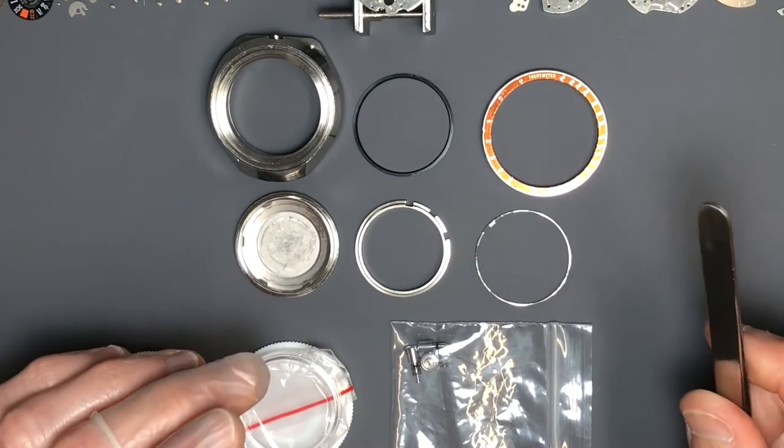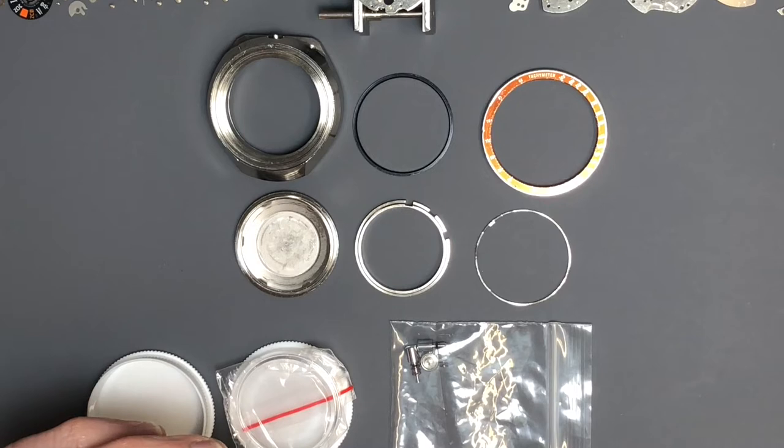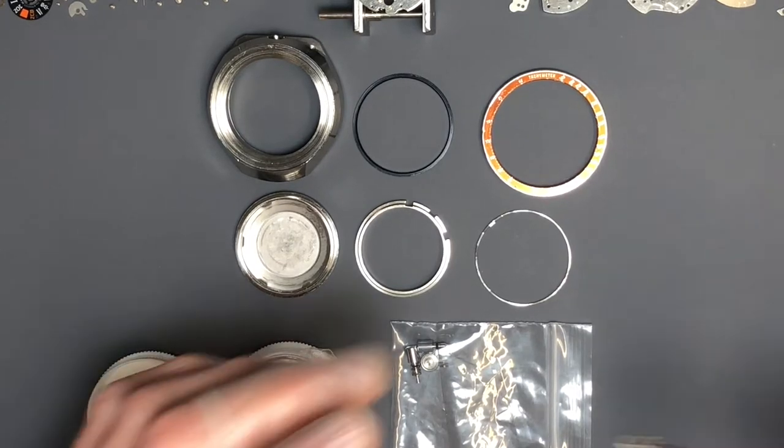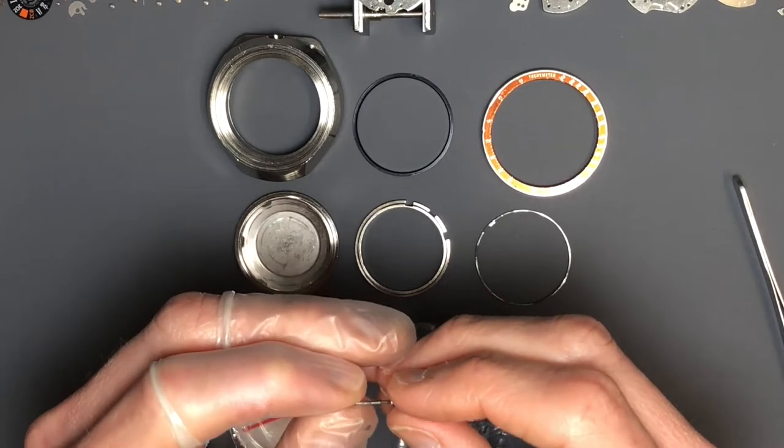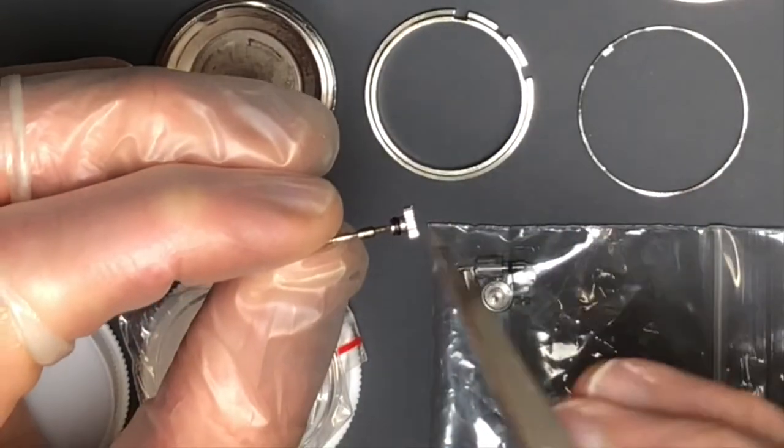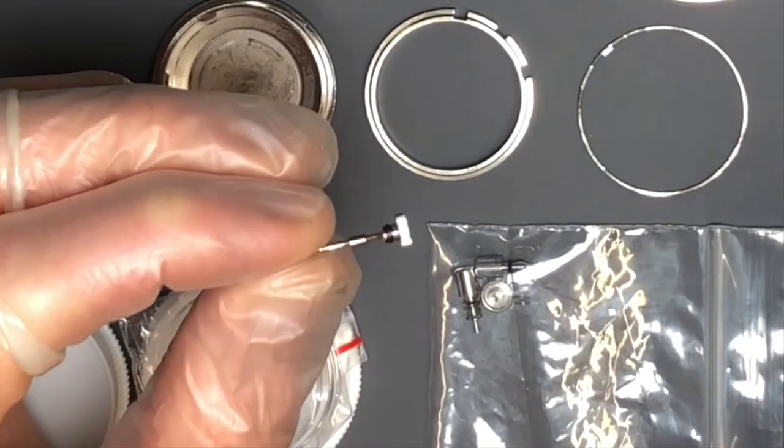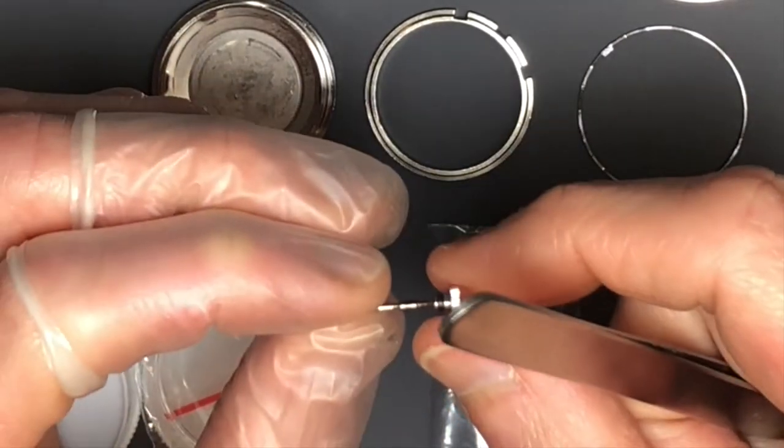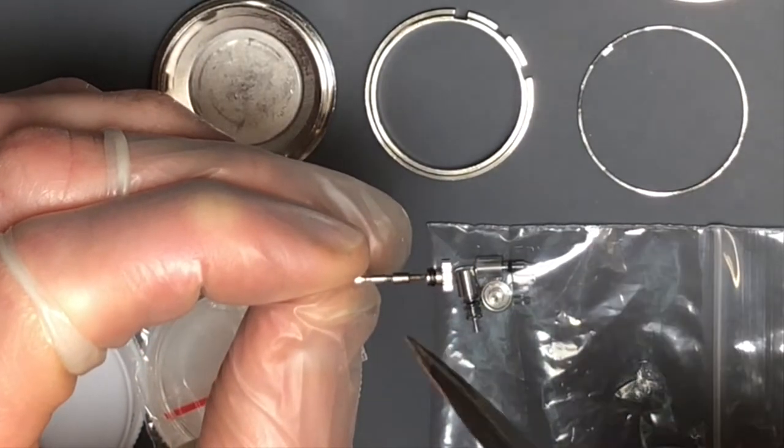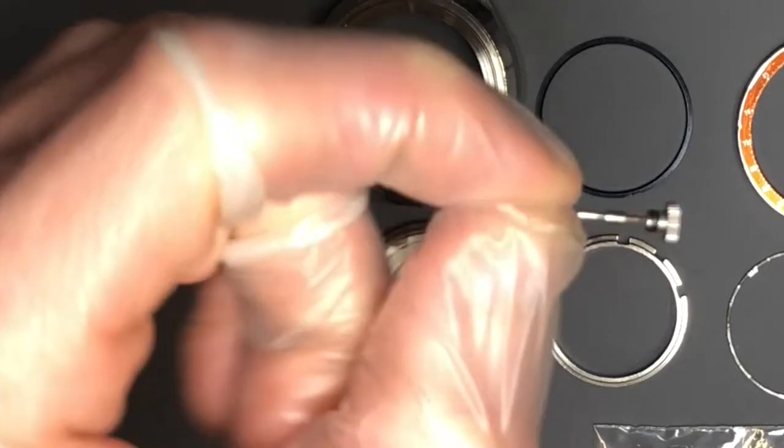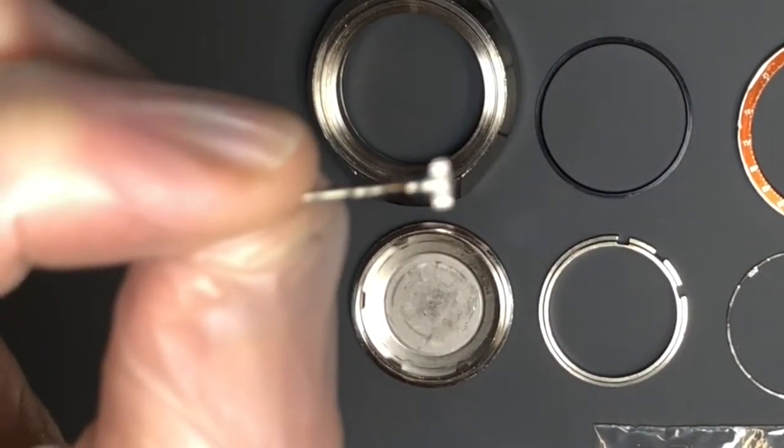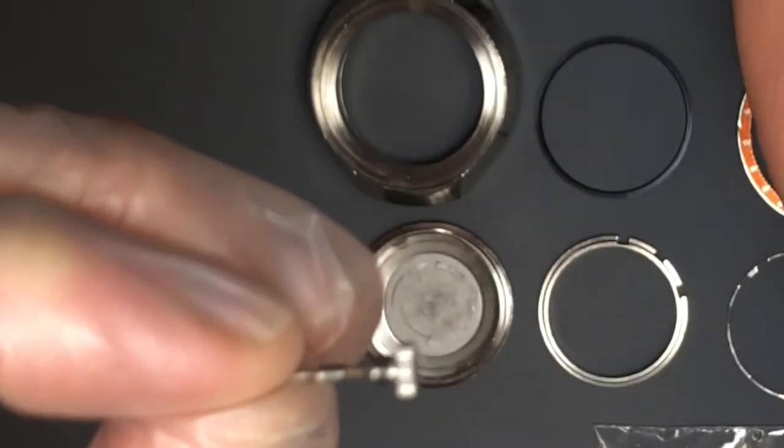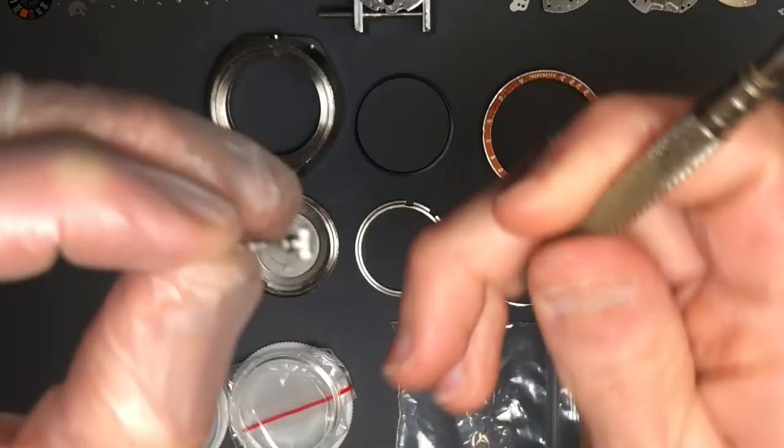I also wanted to show you this stem and crown that were attached originally. Notice this fat part of the stem here. If you've not seen that before, why does this look like this? It's not your typical stem that you would see on this model. The reason is the stem actually looks like it broke originally.